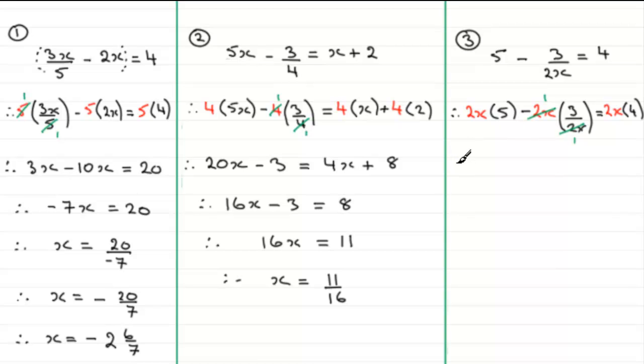So what happens next is that this 2x cancels with this 2x, so we get rid of the fraction. So cleaning this up, we therefore have 2x times five, which is 10x, and then we got minus one times three, which is minus three, equals 2x times four, which is 8x. Now if I subtract 8x from both sides, I get 10x take away 8x, which is 2x, and I'm left with that minus three equals zero.